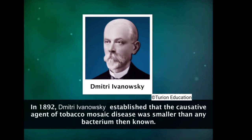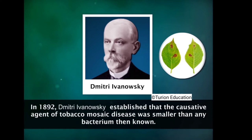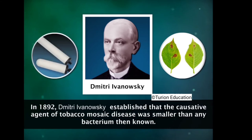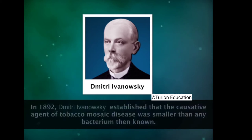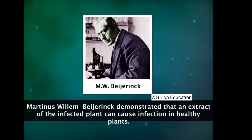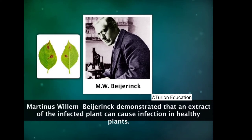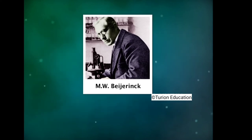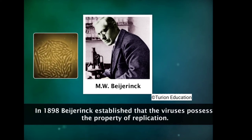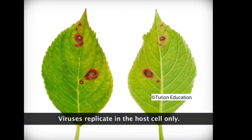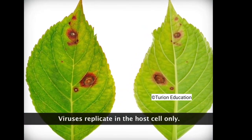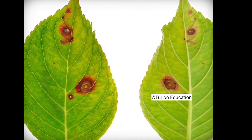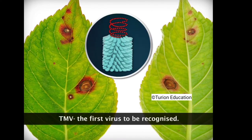In 1892, Dmitri Ivanovsky established that the causative agent of tobacco mosaic disease was smaller than any known bacterium — it could pass through ceramic filters that trap all bacteria. In 1898, Martinus Willem Beijerinck replicated Ivanovsky's experiment and demonstrated that the filtrate remained highly infectious even after being diluted many times. He called the fluid 'contagium vivum fluidum,' meaning 'infectious living fluid.' He also established that viruses possess the property of replication, but unlike bacteria, they could reproduce only by infecting tobacco leaves. This mysterious life form became known as tobacco mosaic virus (TMV), the first virus to be recognized.